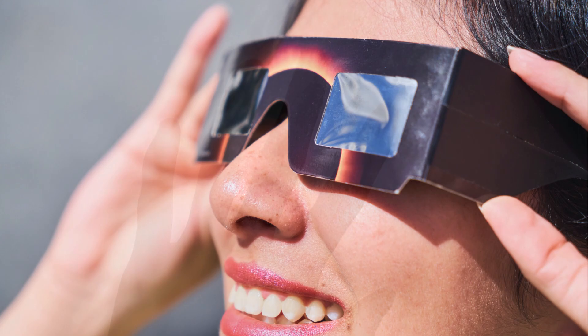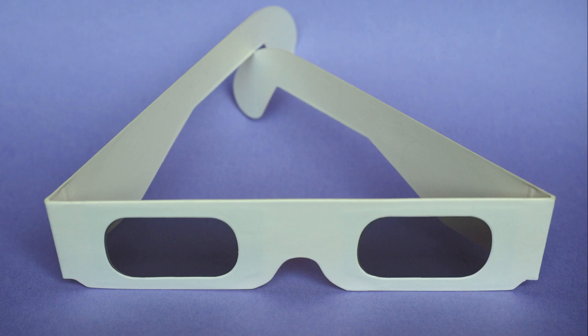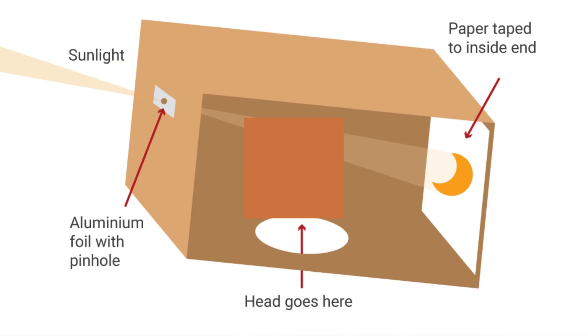Observing a solar eclipse requires caution. Looking directly at the sun, even during an eclipse, can cause severe eye damage. Fortunately, there are ways to enjoy an eclipse safely. Use certified eclipse-watching glasses, which are shaded thousands of times darker than any sunglasses available on the market. Always remember, standard sunglasses are not safe for viewing an eclipse. You can also view the eclipse using indirect methods like pinhole projectors.